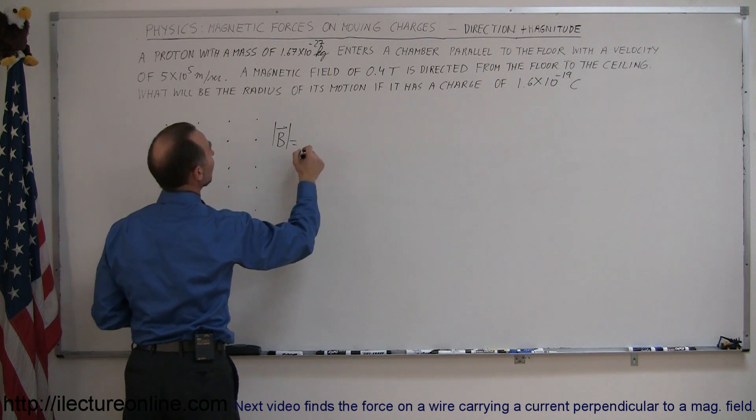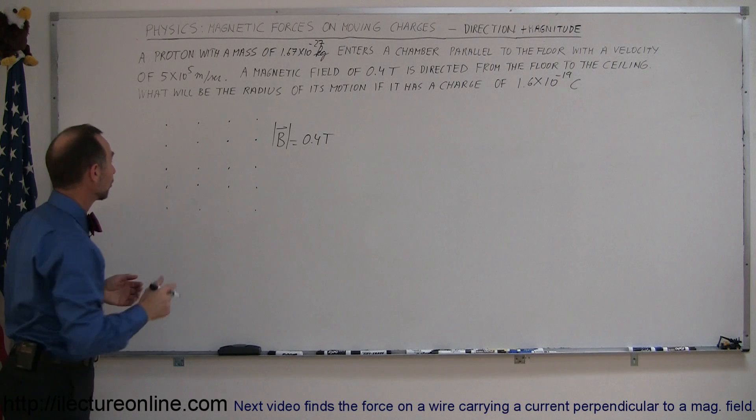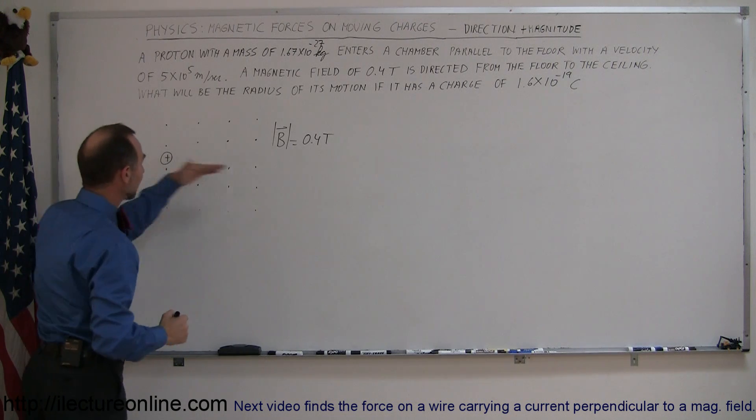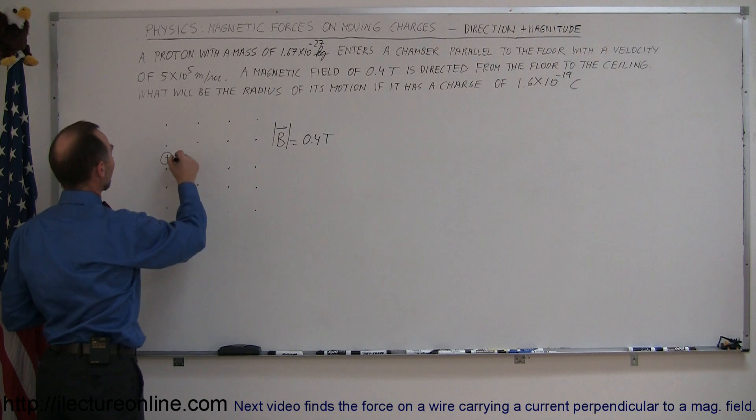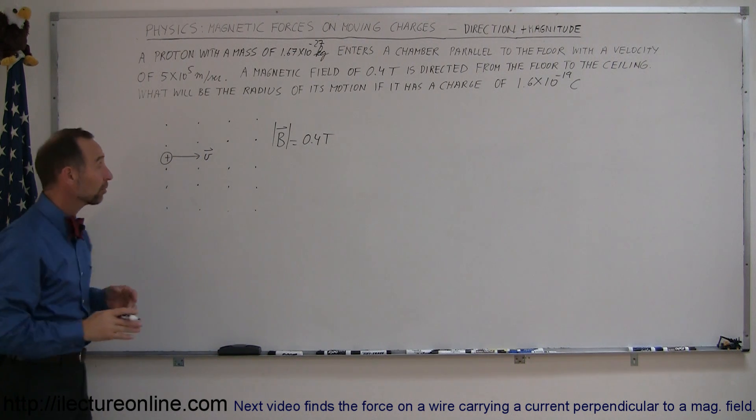And so we have the B field, the magnitude of the B field equal to 0.4 Teslas. So now we have a proton, which is a positive particle, moving through the chamber with a velocity V. And the question now is, what will be the direction of the force?